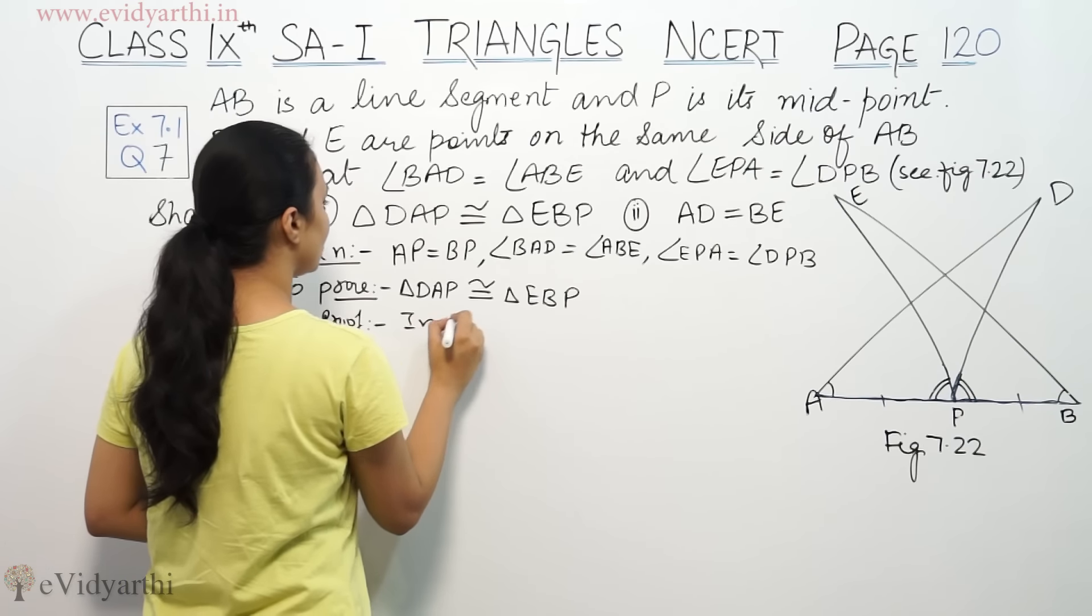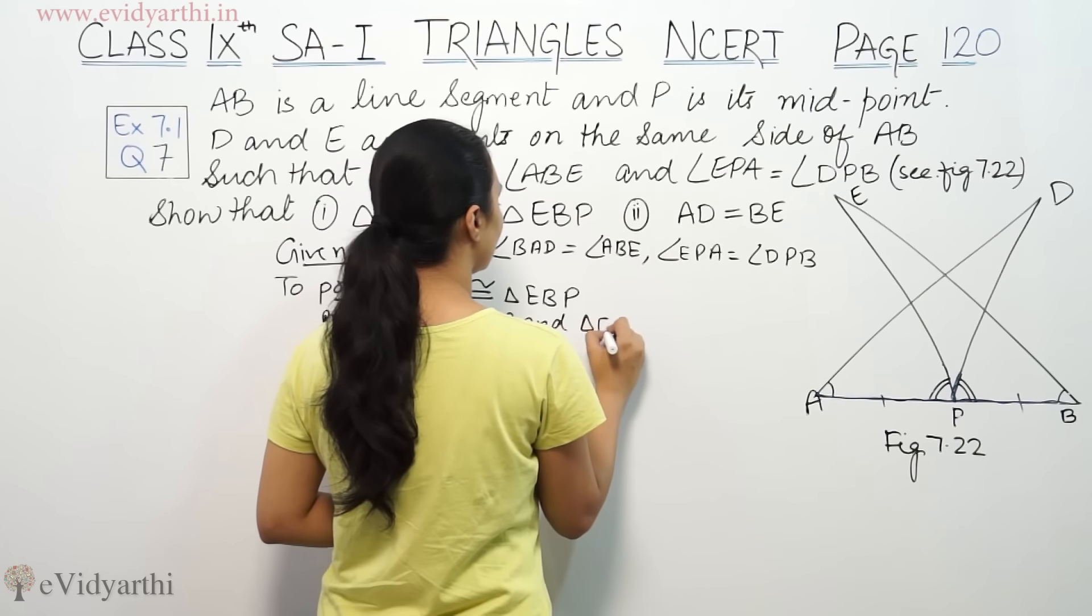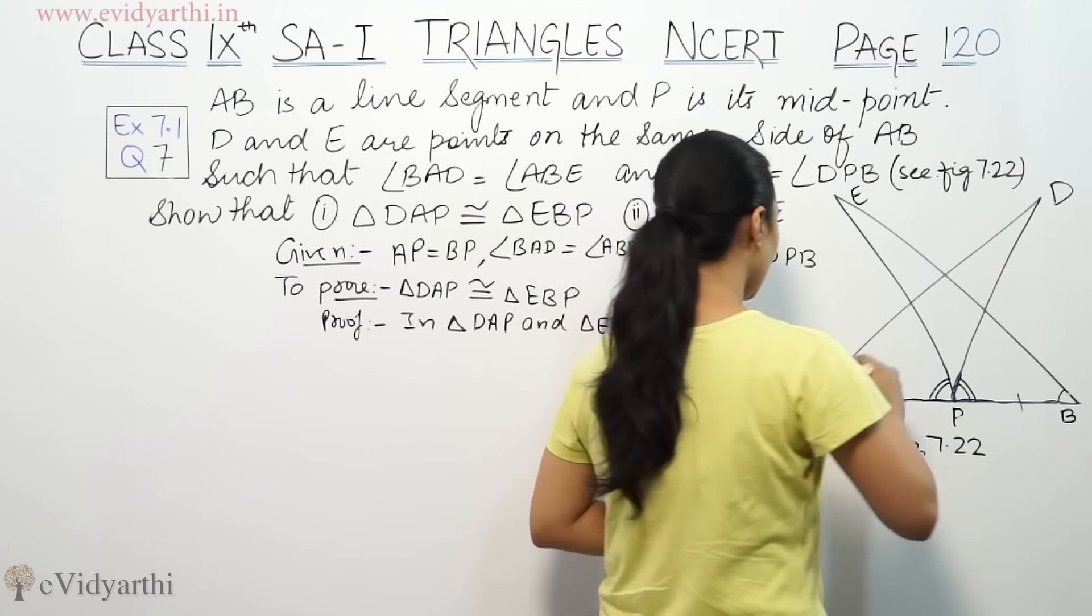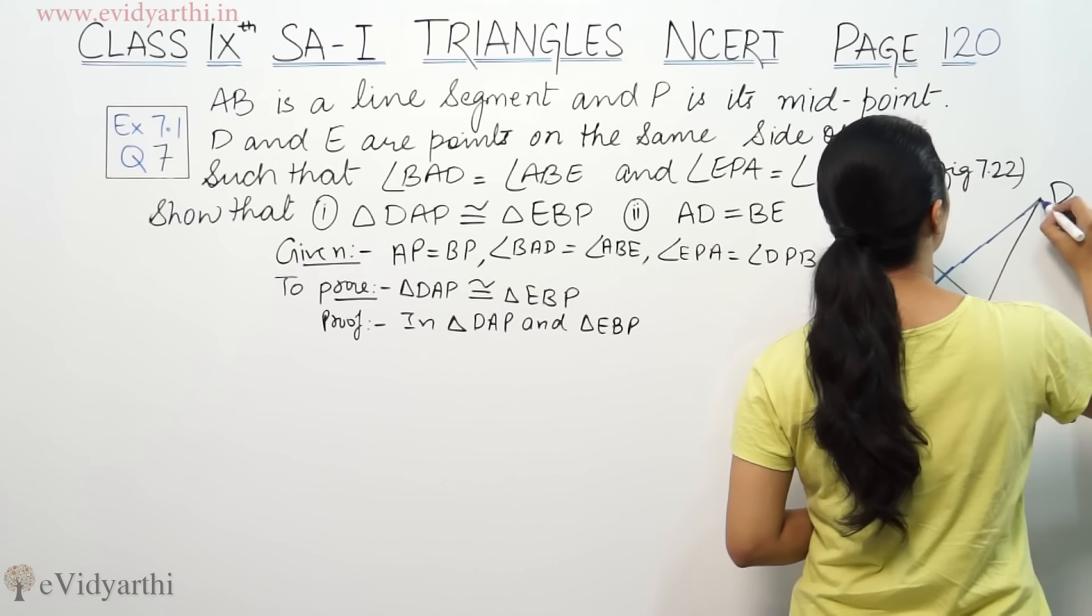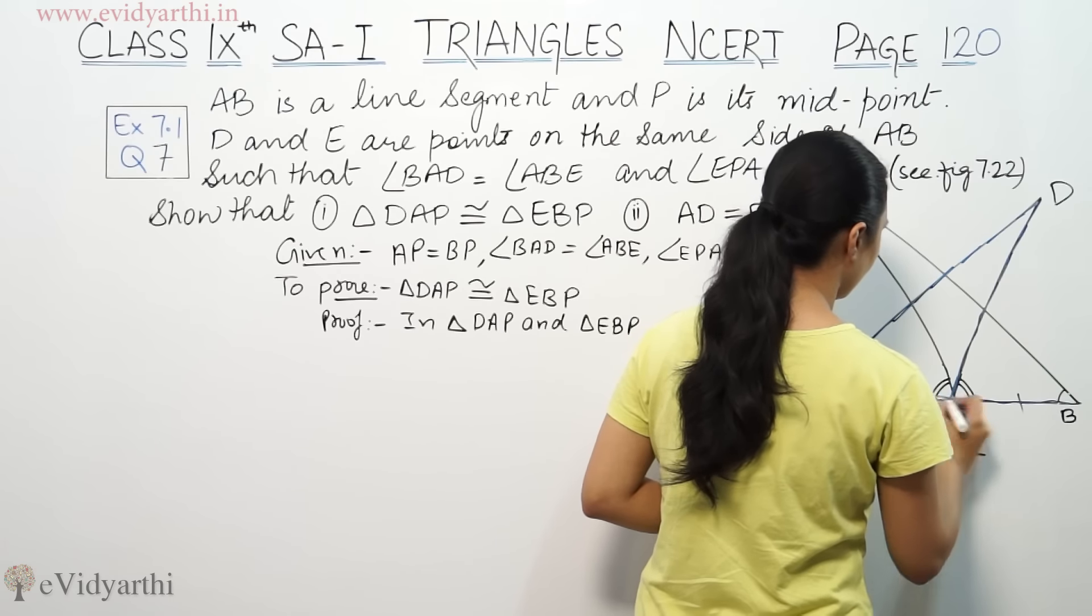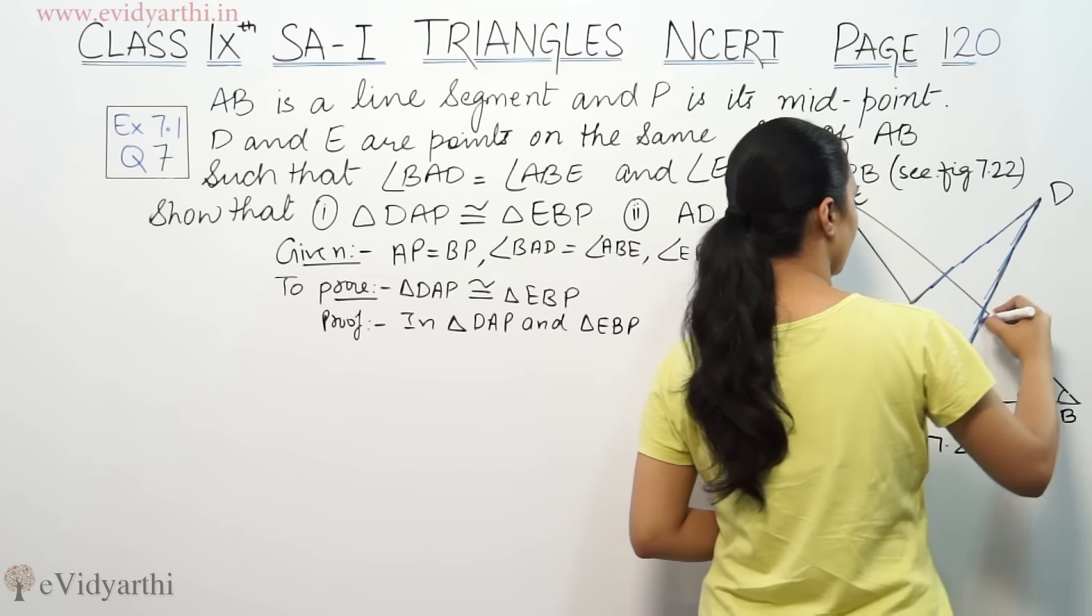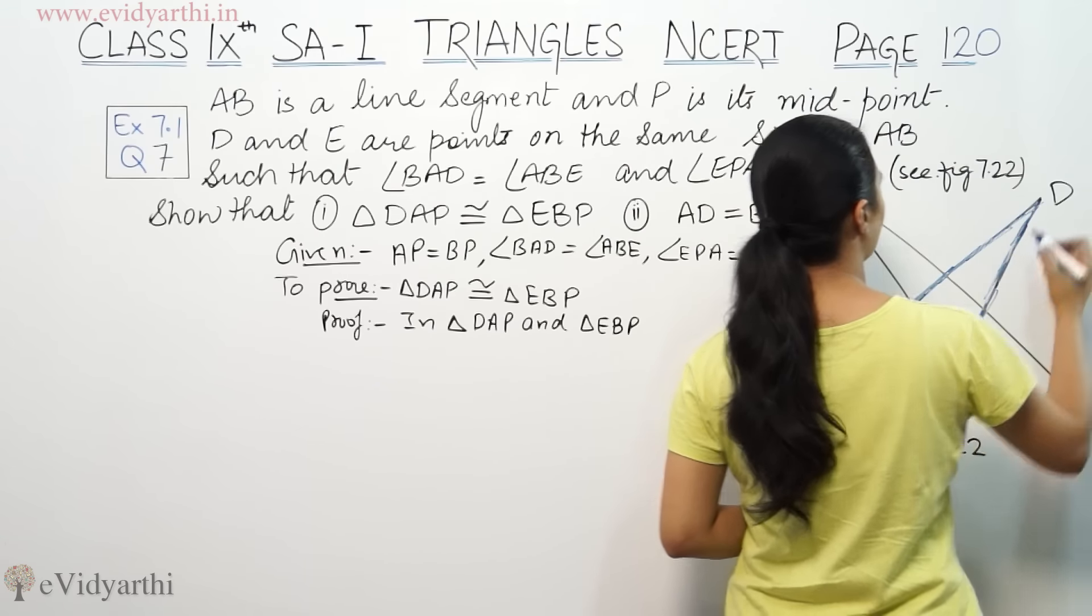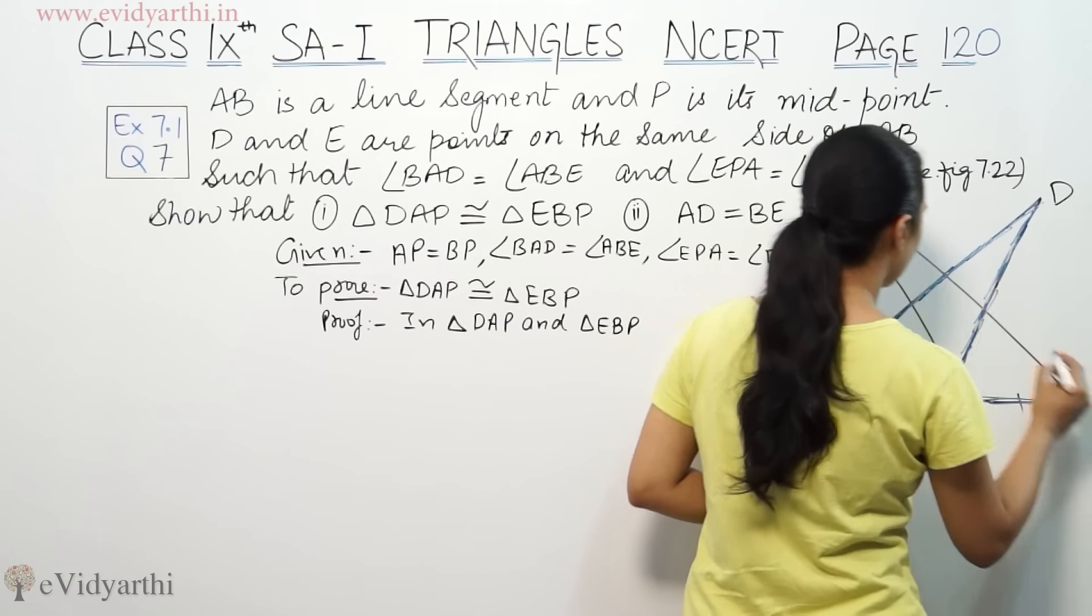First we have two triangles. In triangle DAP and triangle EBP. First we have triangle DAP, this triangle, and the other triangle EBP, that means this one.